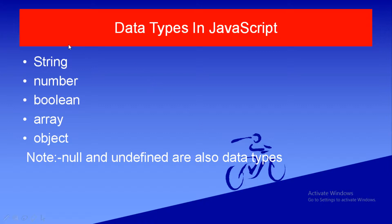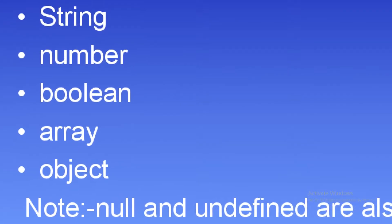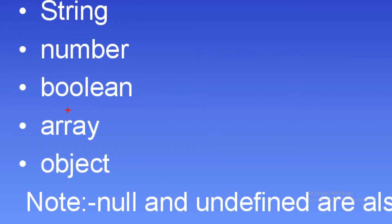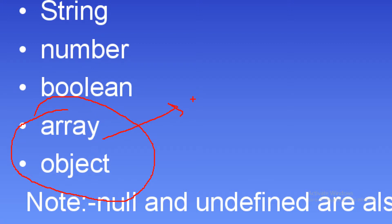In this lecture we will only study about string, number, boolean, null, and undefined data types. In our upcoming lectures we will also study about array and object data types in depth, because these are important concepts. We will discuss them in upcoming lectures so that you can understand better.